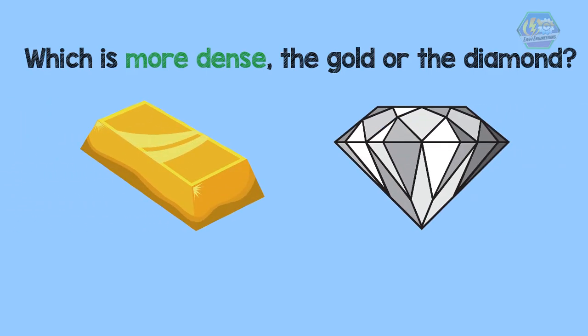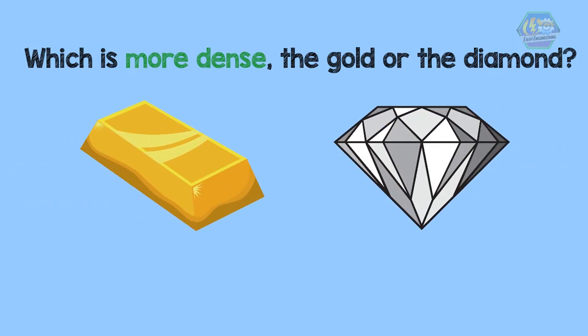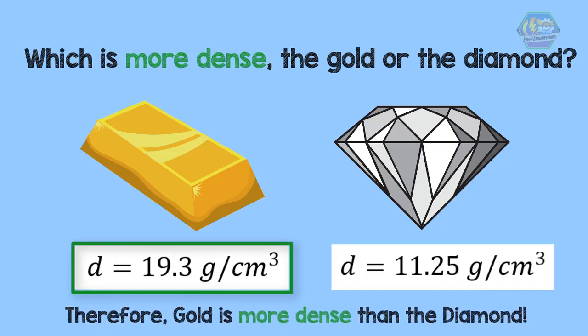Another question, which is more dense, gold or diamond? This question is asking about density. Based on the answers in the example, we can conclude that gold that has a density of 19.3 grams per cubic centimeter is more dense than the diamond. These two questions show why it is important to be careful not to use the word heavier or lighter when you are asking about the density of the object.